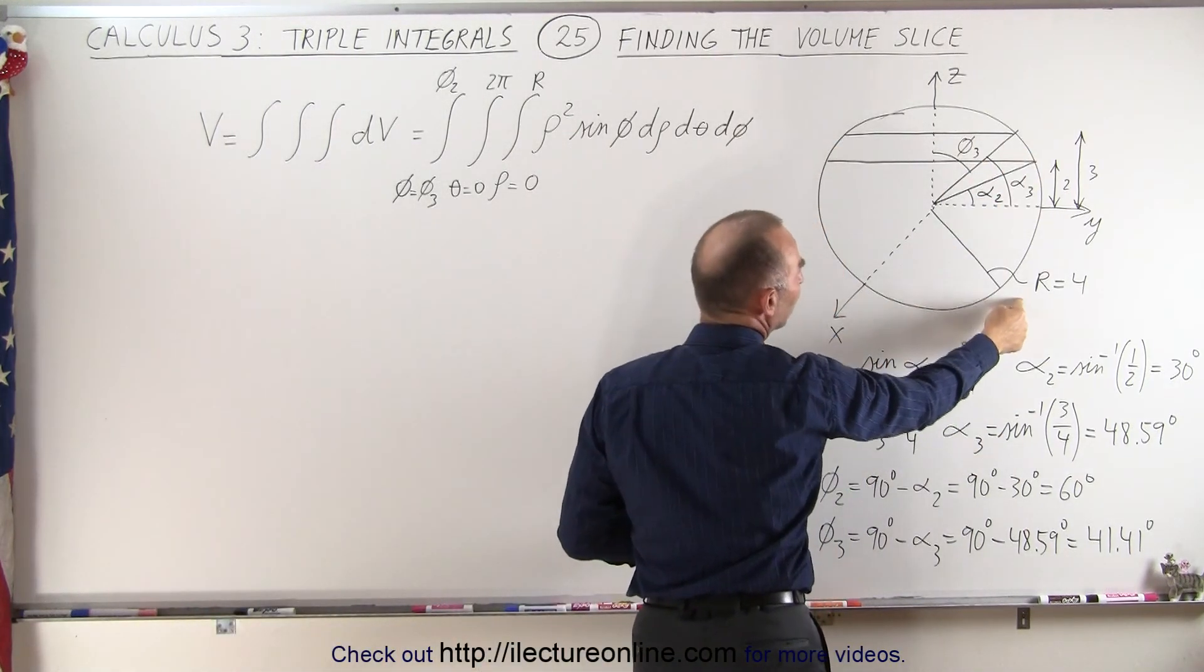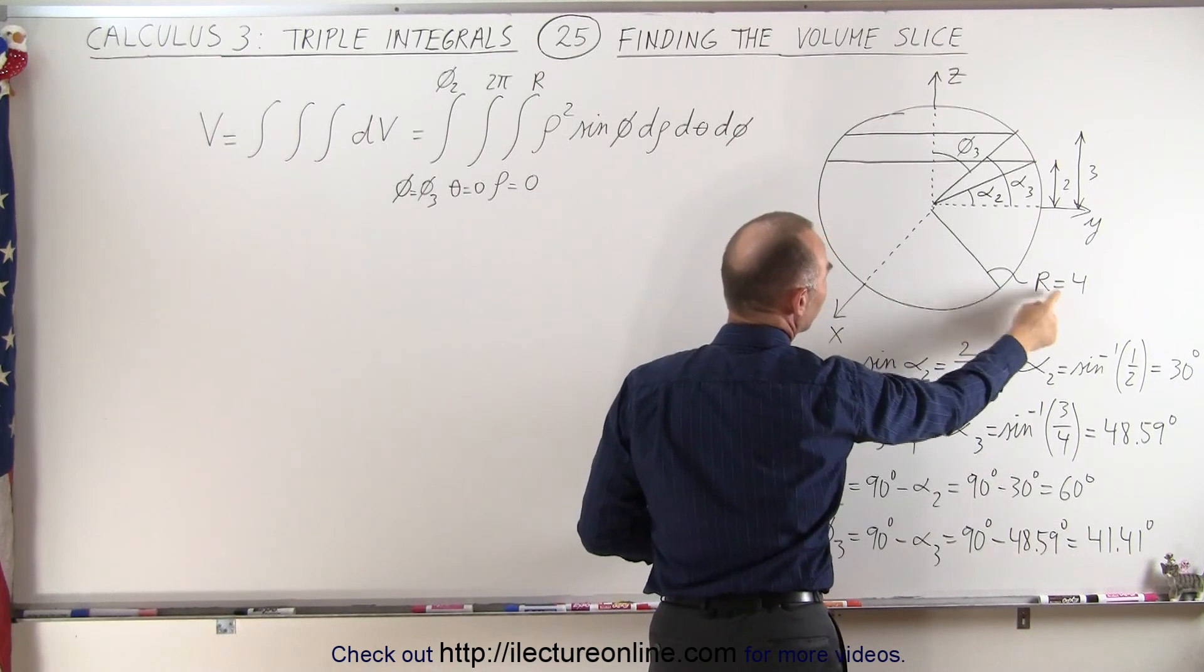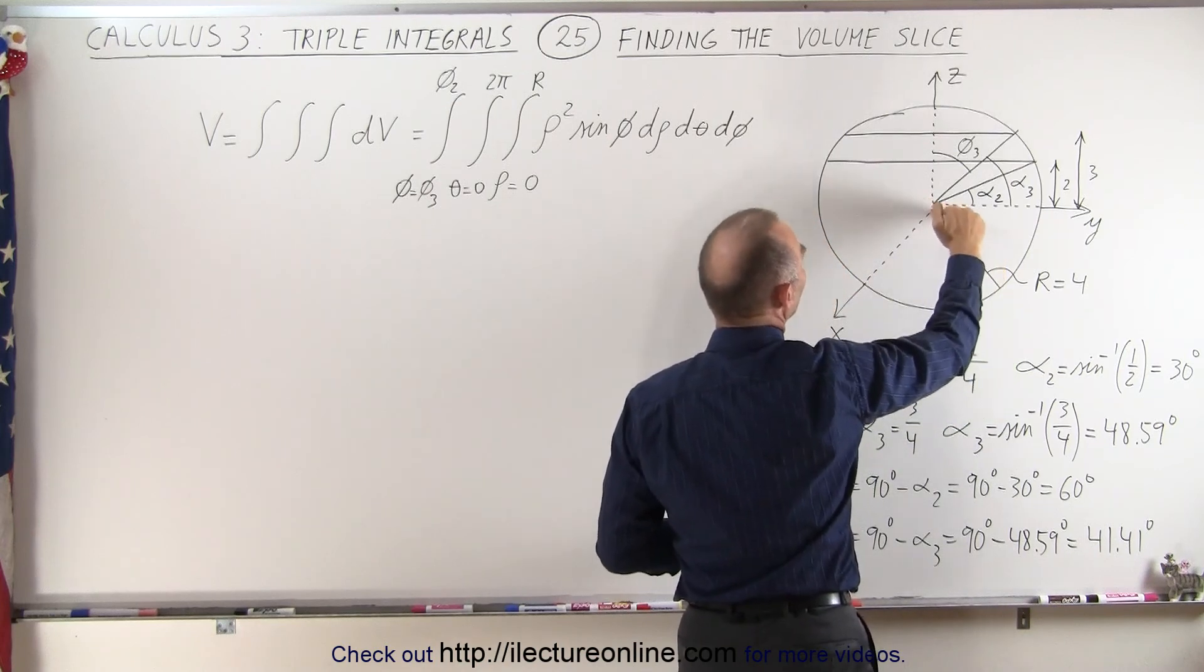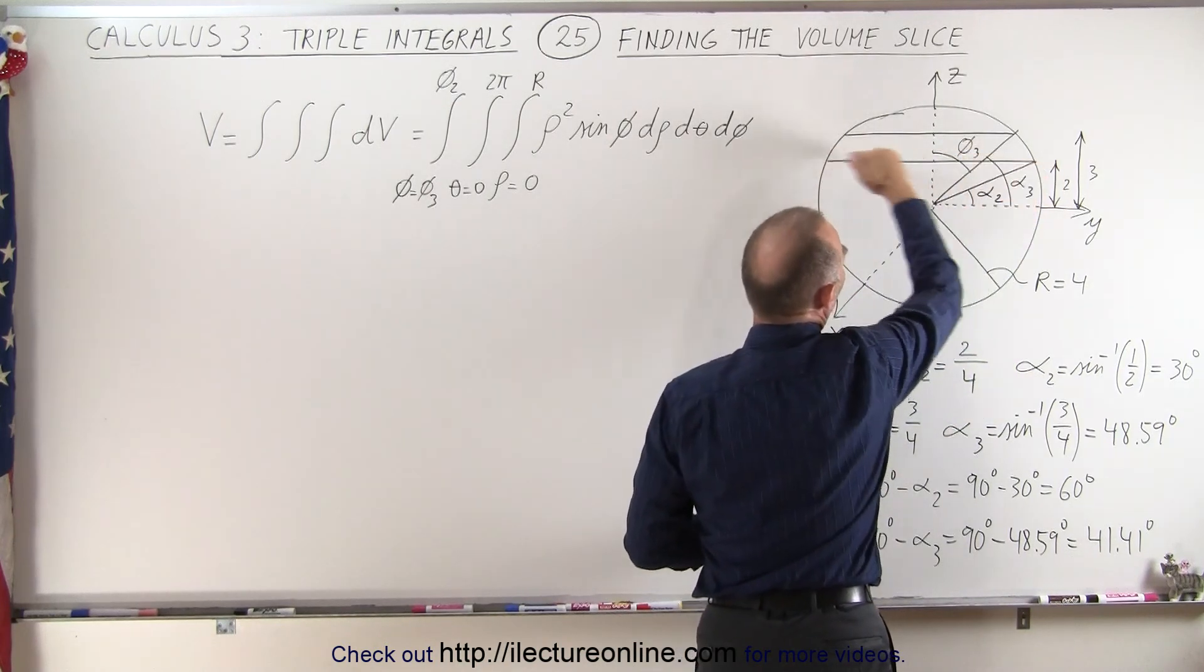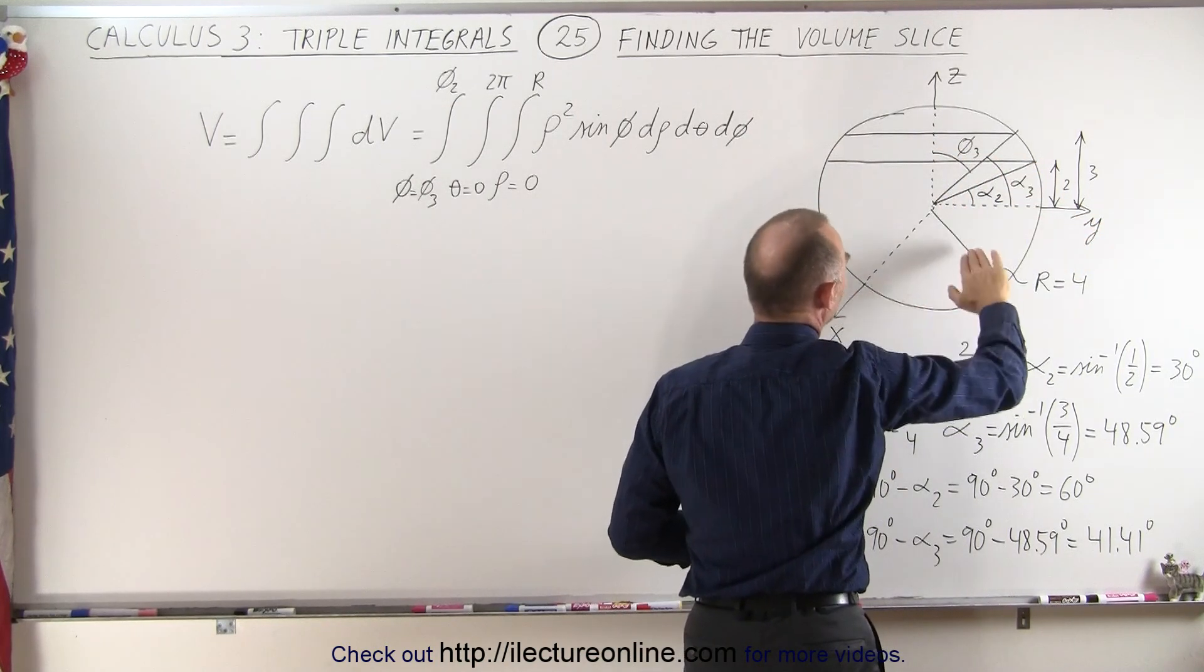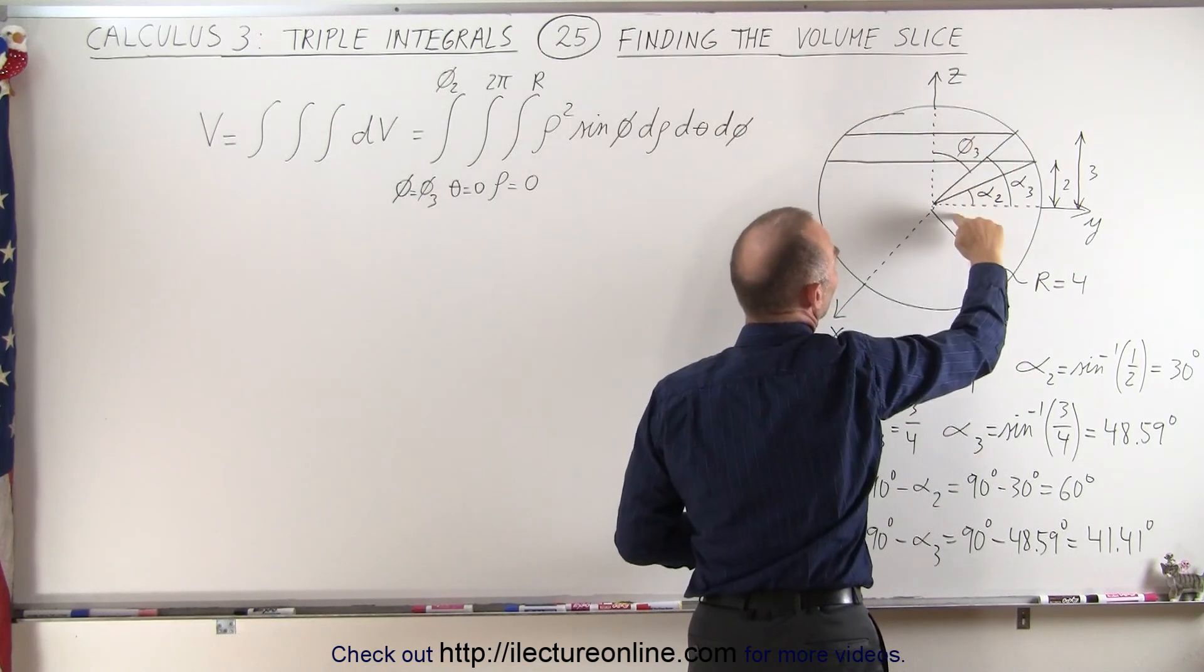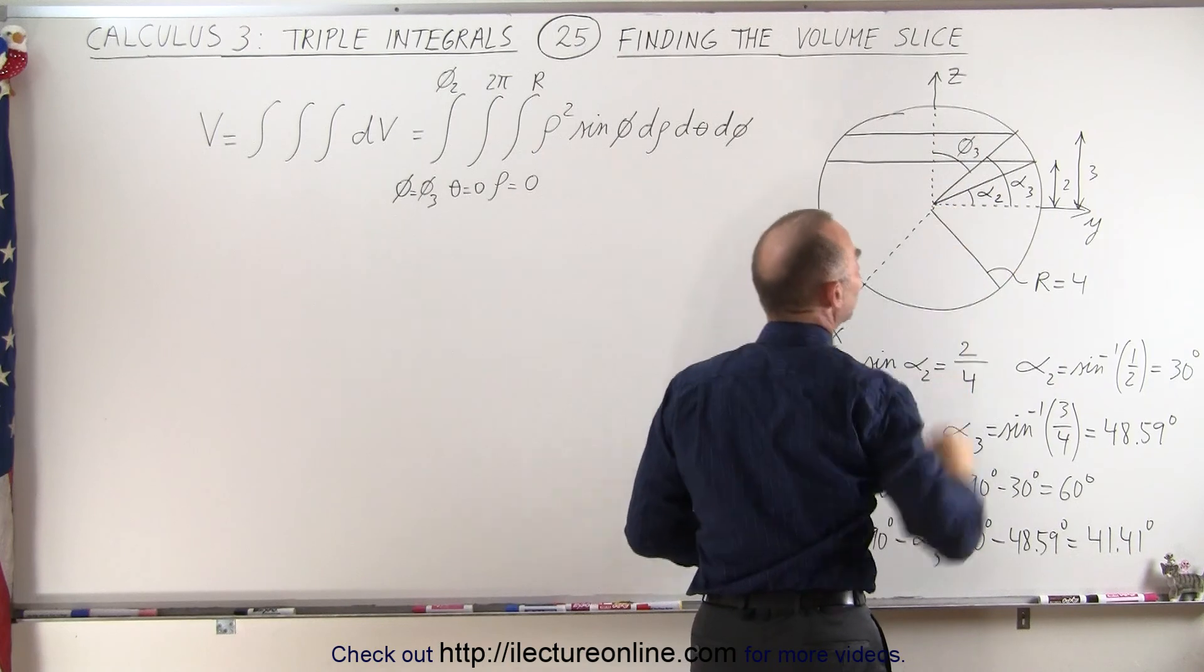Notice that the radius of the sphere is equal to 4. The sphere is centered at the origin and we're going to find the slice where the lower side of the slice is parallel to the xy-plane two units above the xy-plane and the top of the slice is three units above the xy-plane.